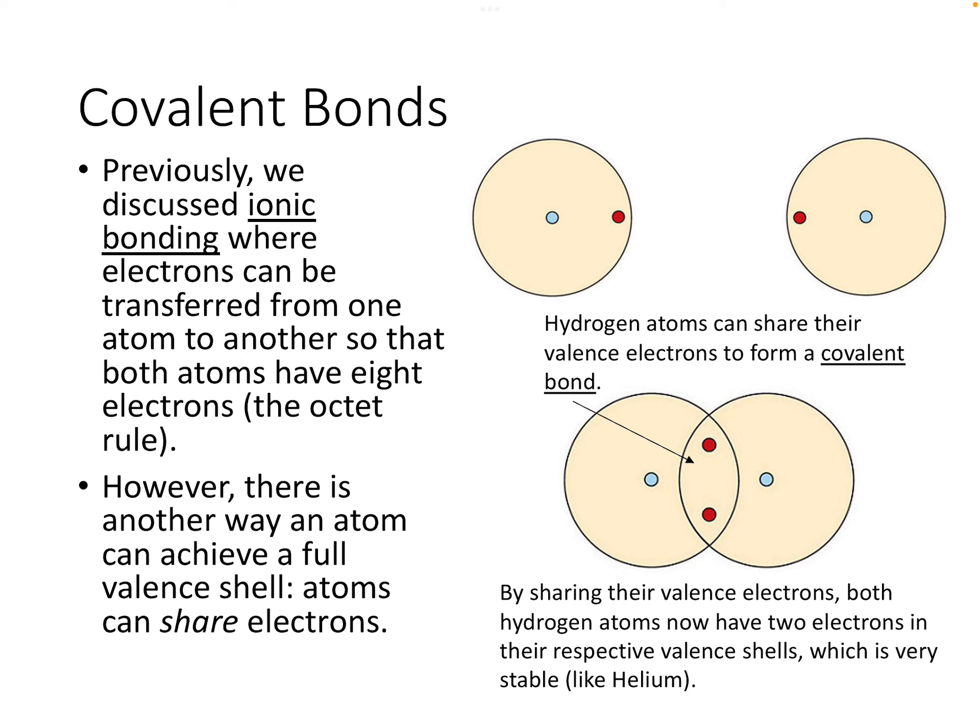So, covalent bonds. Previously, in the last chapter, we discussed ionic bonding, where electrons are transferred from one atom to another so that both atoms have eight electrons — we can call that the octet rule. However, there is another way that atoms can achieve a full valence shell, and that involves sharing electrons.